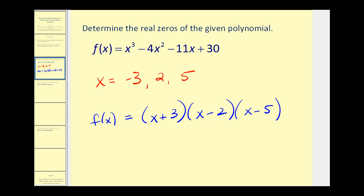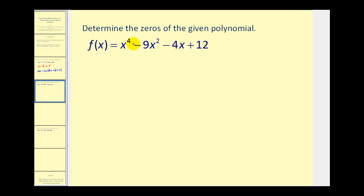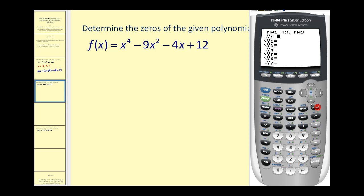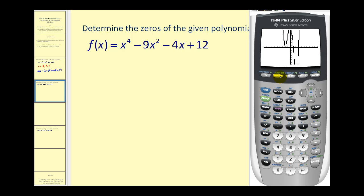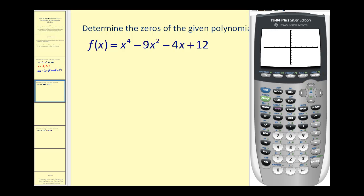Let's try another one. We now have a degree four polynomial, so we will have four complex zeros, but we may or may not have four real zeros. Press y equals and type in the new function, then press graph. Let's adjust the window — I'll change x minimum to negative five and x maximum to positive five — and press graph to spread it out a little bit.